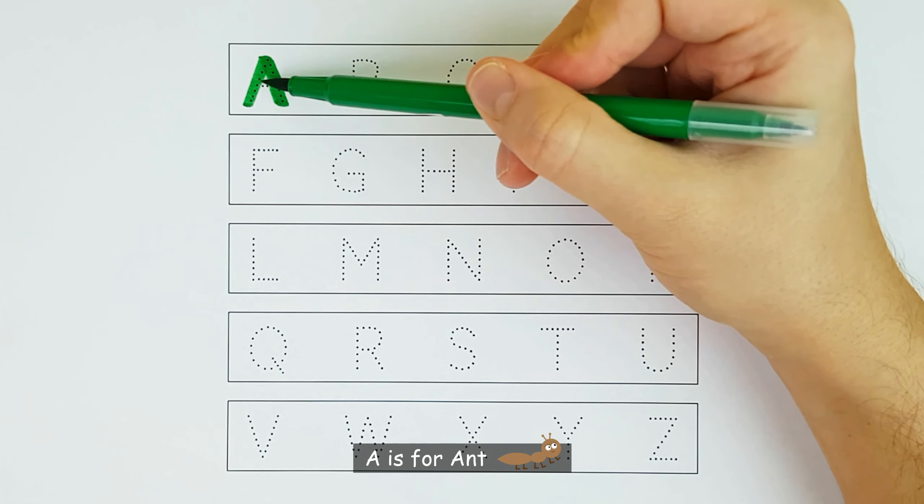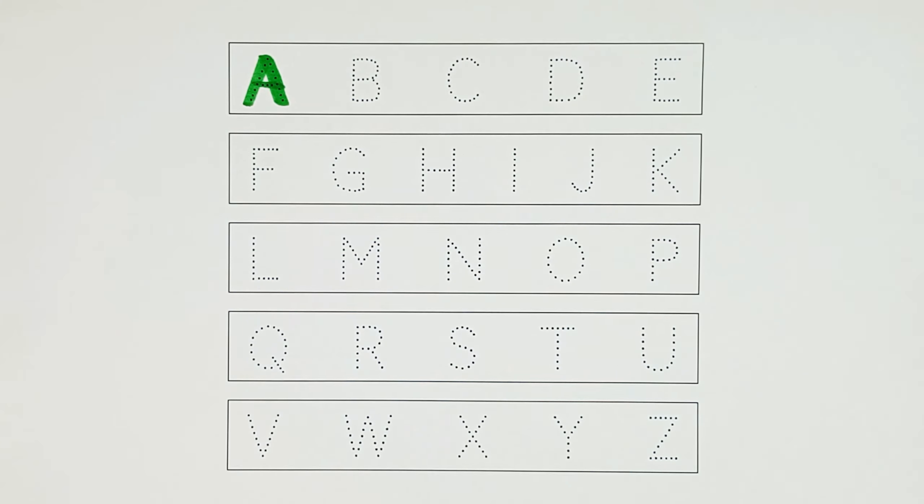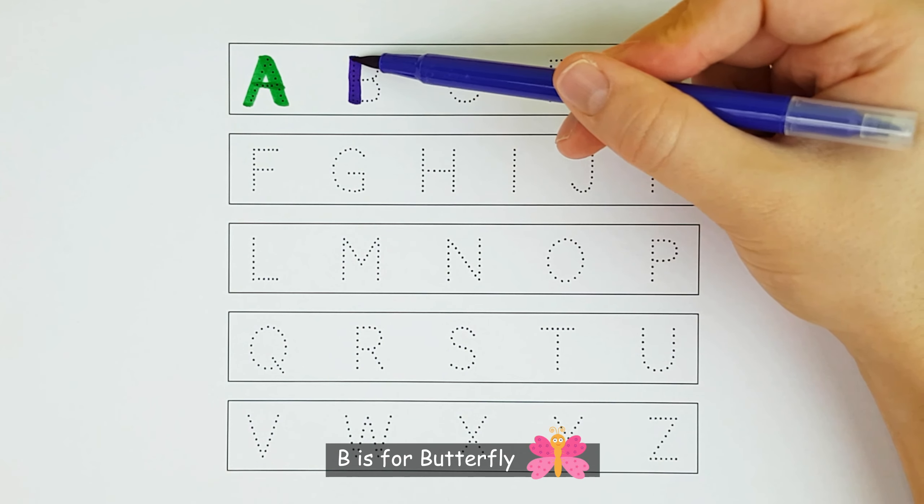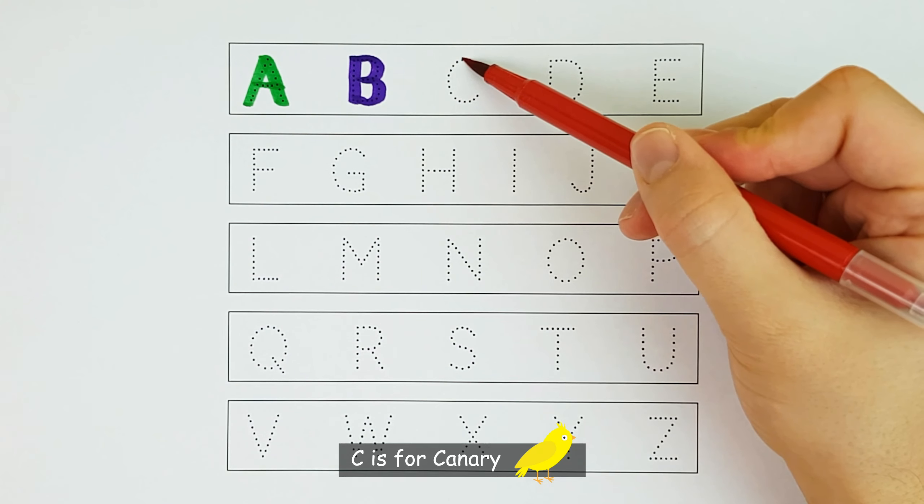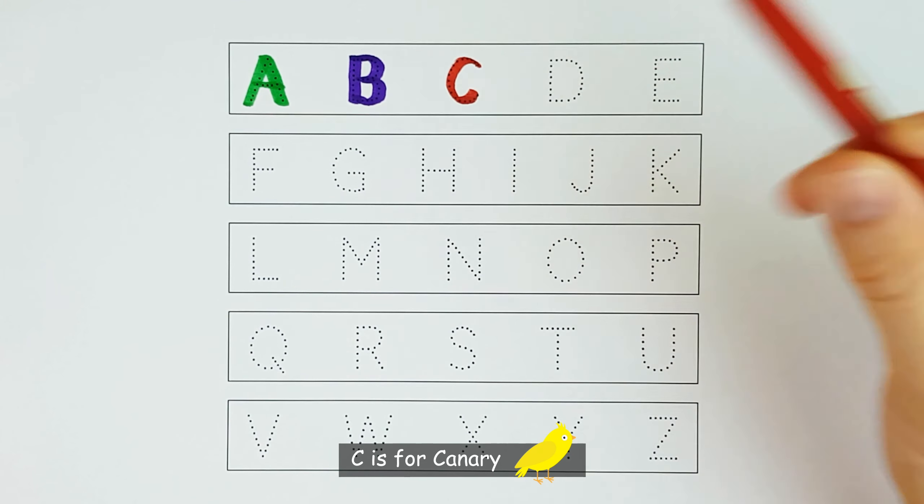A. A is for Ant. A. B. B is for Butterfly. B. C. C is for Canary. C.